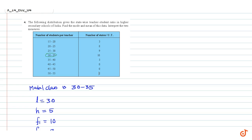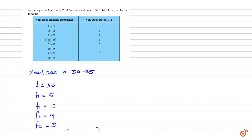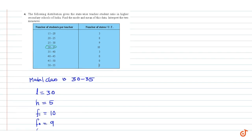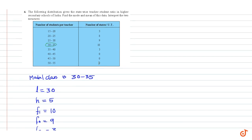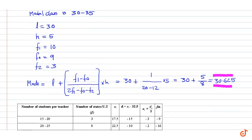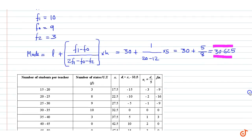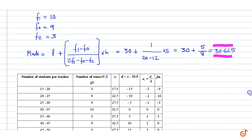This shows that most of the states have a number of students per teacher of 30.625. Now we will calculate the mean.